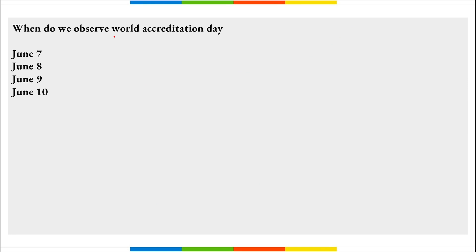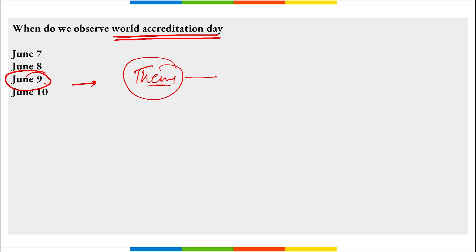When do we observe World Accreditation Day? It is observed on 9th of June to promote the value of accreditation — a review process to determine if educational programs meet the defined standards of quality. This day creates awareness about whether educational programs meet quality standards or not. The theme for World Accreditation Day is 'Accreditation Supporting the Future of Global Trade.'